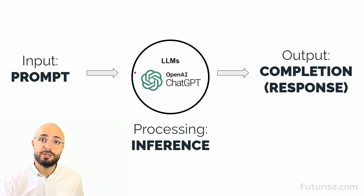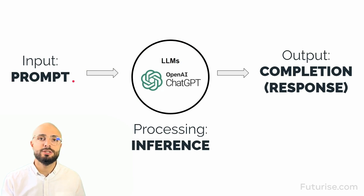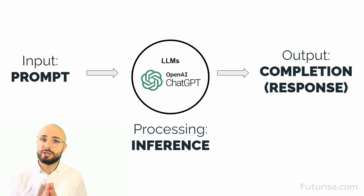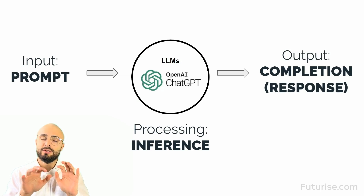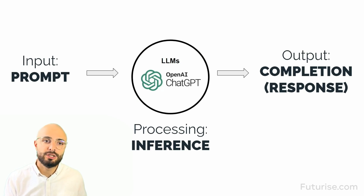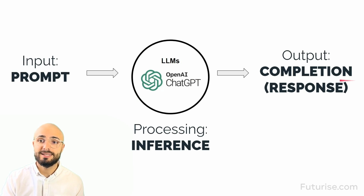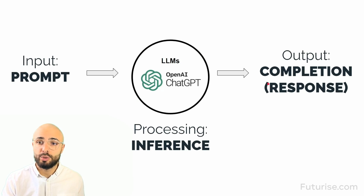Large language models in general take as input what you call a prompt — this is just human-written text, what you call natural language. There's no coding required to use these large language models; it's just your human-written natural language, English or other languages, that you type in. As output you get what you call the completion, which is the technical term for the output. Throughout this course, however, we're going to be using the word 'response'.